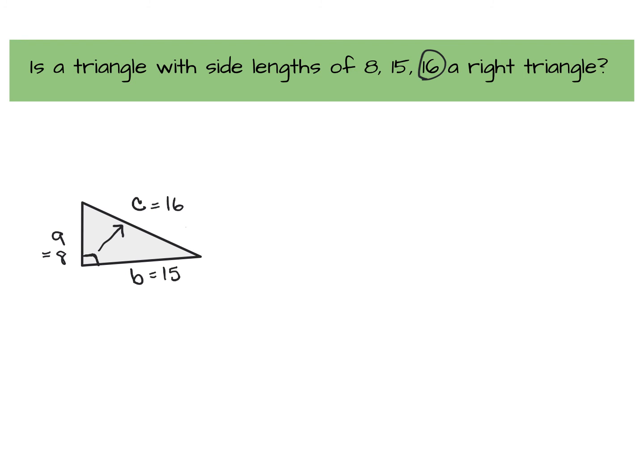Once you have it labeled, let's do a check using Pythagorean theorem. So A squared plus B squared. And again, I like my C squared on the left-hand side. We have 8 squared plus 15 squared, which gives us 64 and 225.